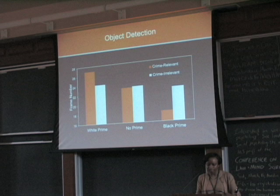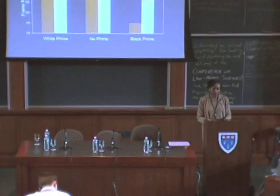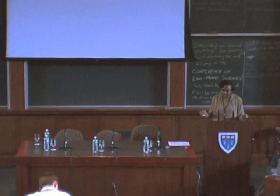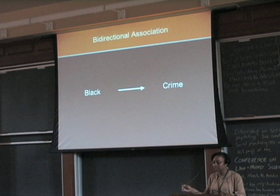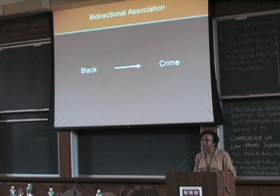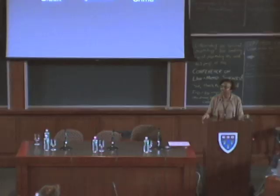So exposure to the black faces facilitated the detection of these crime objects whereas exposure to the white faces inhibited the detection of those very same objects. Now the next set of studies I want to present have to do with the issue of racial profiling. The idea here is that when people think black, they think crime — and the first study I just presented demonstrates this. But my colleagues and I wanted to argue that the association works in the opposite way as well: when people think about crime, they think about black people. Thinking about crime draws attention to black Americans, placing them under surveillance.